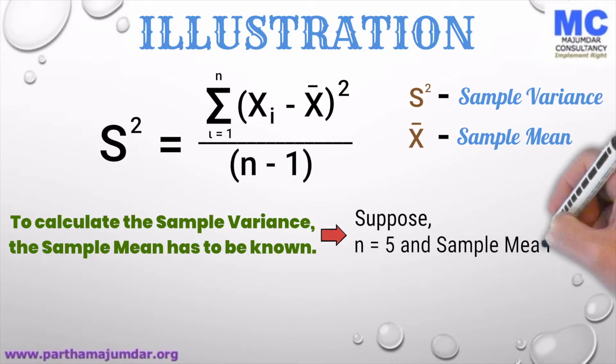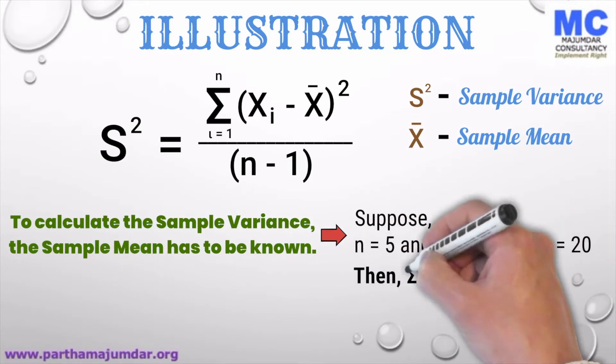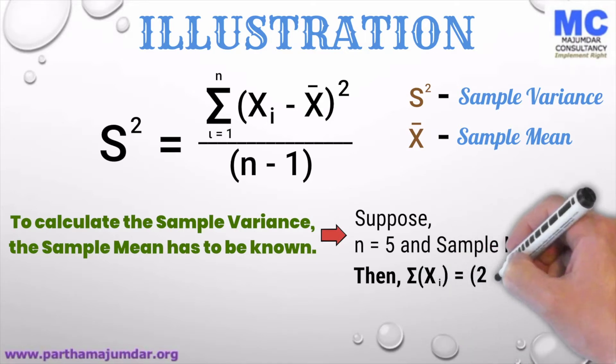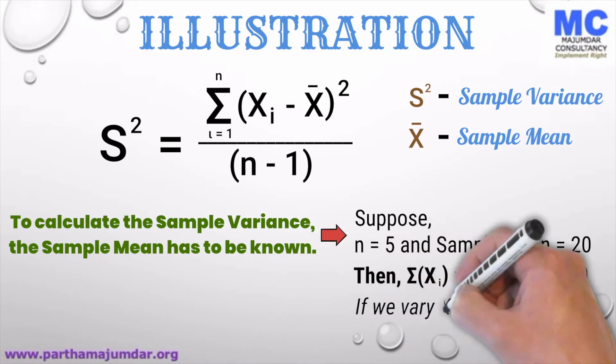Suppose that n is equal to 5 and sample mean is equal to 20. Then, we know that the summation of all xi's is equal to 20 times 5 or equal to 100.